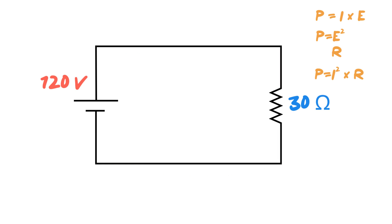There are three basic formulas we deal with. Power is equal to I times E, which is voltage times current. Power is equal to E squared over R. And power is also equal to I squared times R. We've already assigned 120 volts and 30 ohms, so we'll start calculating power using each formula — and ideally, they should all work out to be the same.